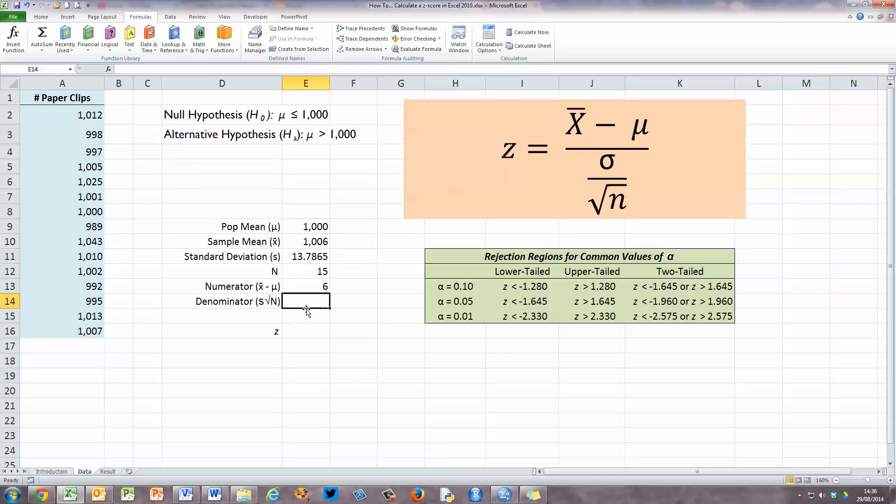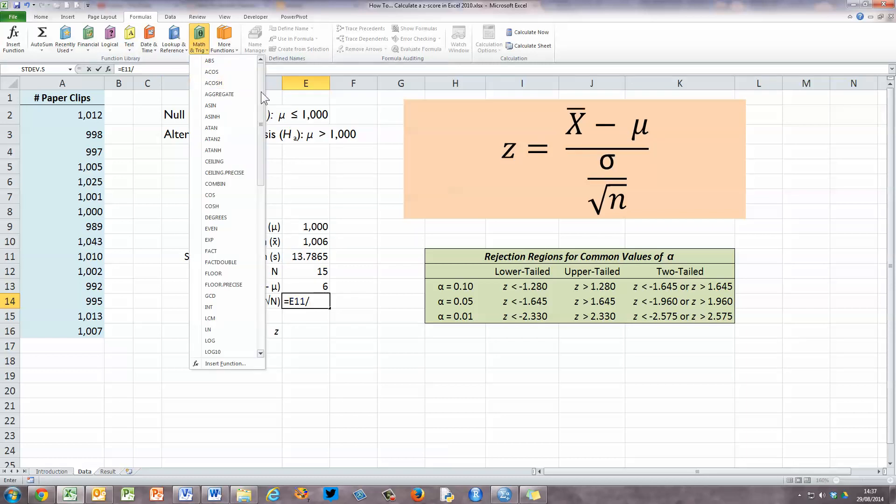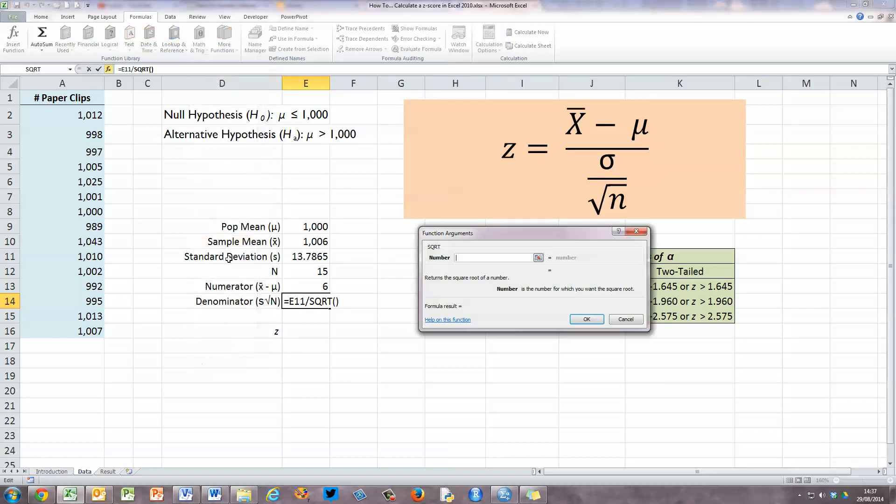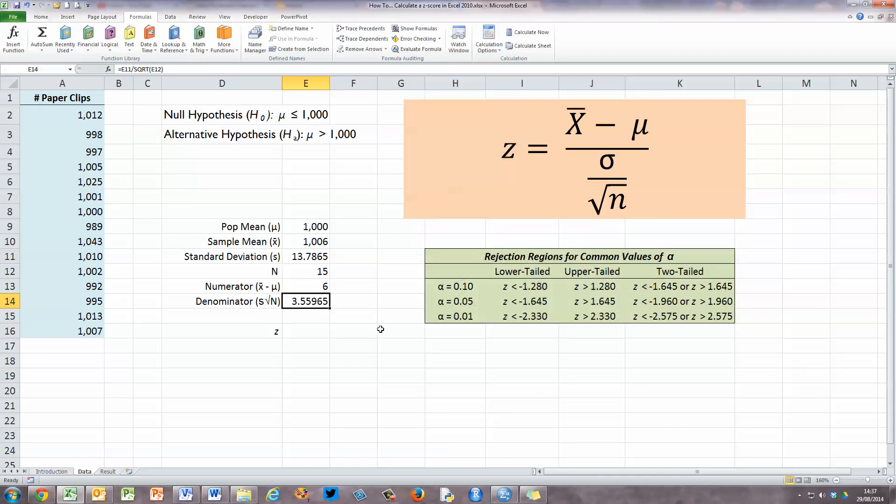Our denominator is slightly more awkward. We want to take the standard deviation and divide it by the square root of n. So again, type in equals and our standard deviation is 13.78. So I'll put that in there, put in the division sign. And we want to now use the square root function to calculate the square root of n. So this is a maths function. I want to scroll down here until I get to sqrt. And I need to insert the value in here. And I'm looking for the square root of n, the value of 15. So select that box and click OK.